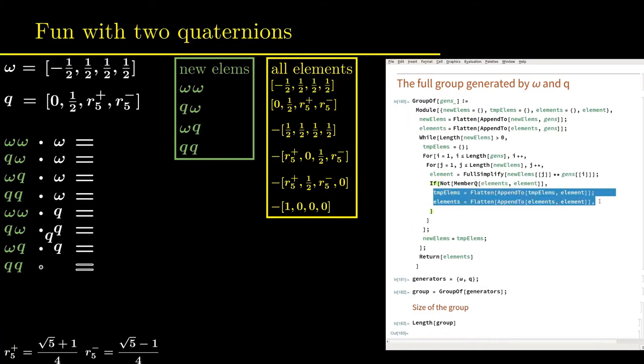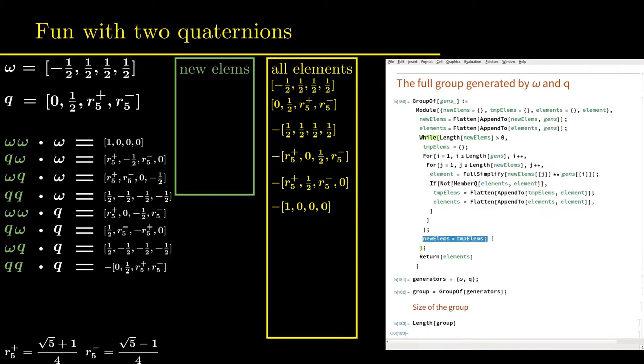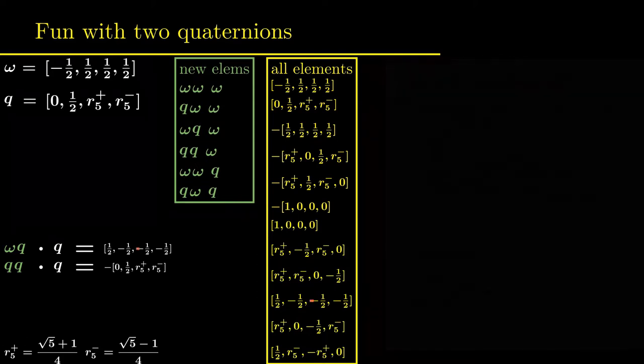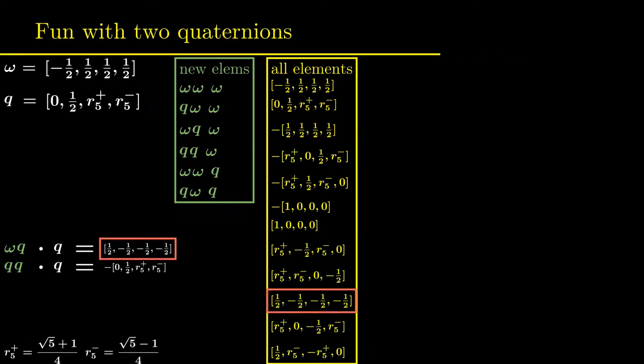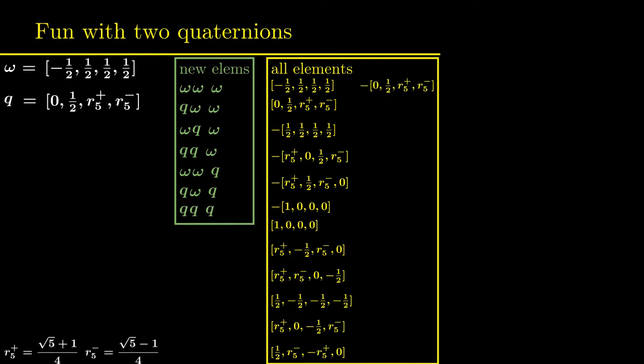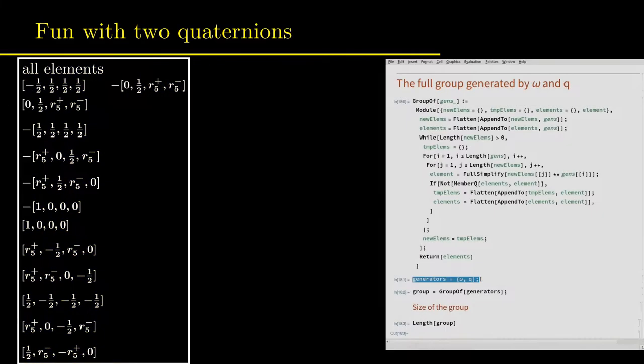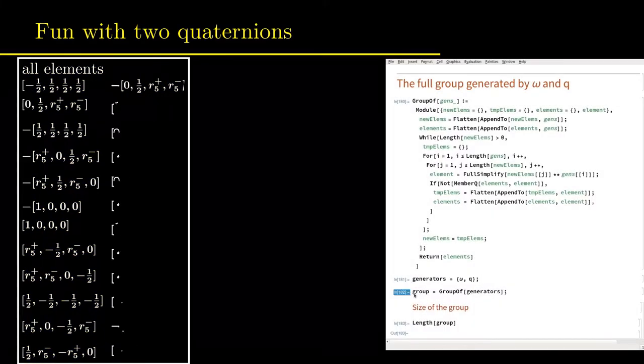In the next step, there will be eight elements generated from these four quaternions. However, only seven out of the eight new elements are different. The seventh product has already been added to the list of all elements and therefore it can be disregarded. Therefore, the list of new elements will not grow forever. It turns out that there are 120 quaternions that can be generated from the two quaternions omega and q.